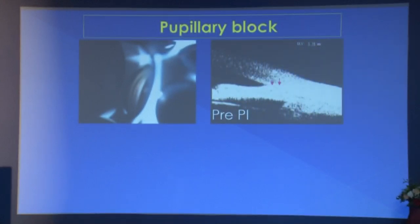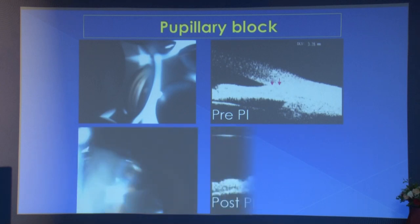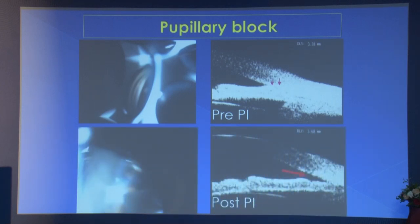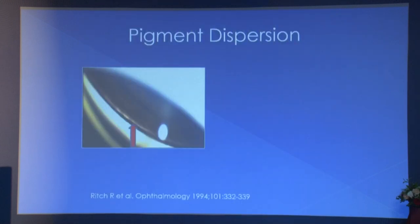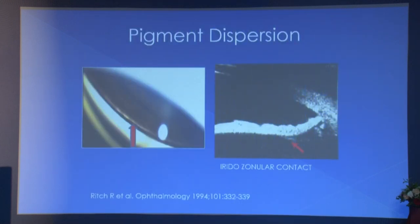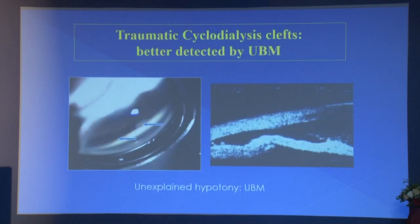Pupillary block can be best assessed by varying light intensity with UBM — pre- and post-PI images show angle opening after laser iridotomy. UBM also shows pigment dispersion with zonular-iris contact causing rubbing and pigment release, as well as traumatic cyclodialysis.